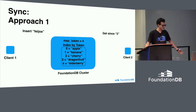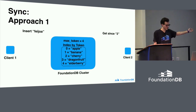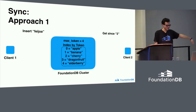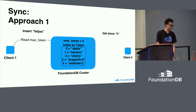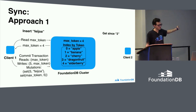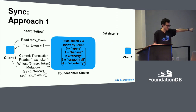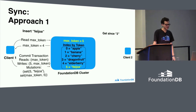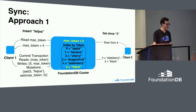Here's a simple sync machine example. Inside the cluster we have five items, the max token is four, items are indexed zero through four. To insert something, a client reads the max token — gets back four — then commits a new transaction with max token in its read set and the new key (five) plus the updated max token in its write set. If it's the only client, Feijoa gets added to the end and the max token gets updated atomically. A second client syncing from three will scan starting at four and get back two results: Elderberry and Feijoa.